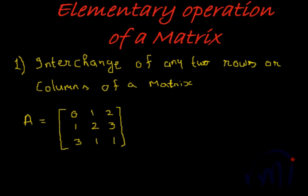There are three such operations applicable on rows and columns. So you apply any of these three operations on the rows, the nature of the matrix does not change. You apply them on columns of a matrix, again the nature of the matrix does not change. Let us learn those operations one by one.